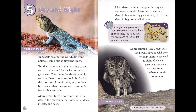Chapter 5: Day and Night. In deserts around the world, different animals come out at different times. Reptiles come out in the morning to get warm in the sun. Lizards lie on rocks to get warm, and lie in the shade when it's too hot. Desert tortoises look for food in the morning. At night, they stay in their burrows to stay warm and safe from other animals. Many desert birds also come out in the day — in the morning, they look for spiders, insects, and seeds. Most desert animals sleep in the day and come out at night. Many small animals sleep in burrows, while bigger animals, like foxes, sleep in big holes called dens.